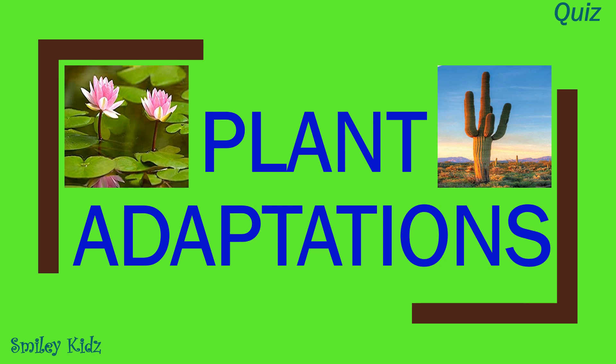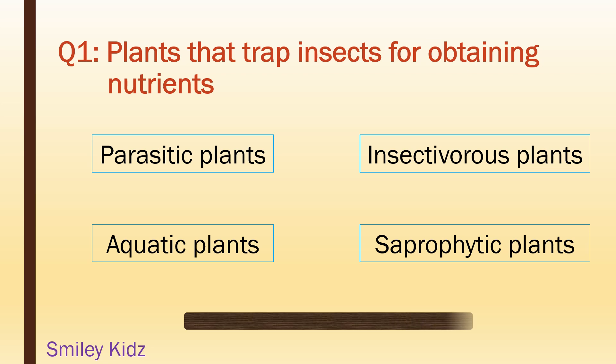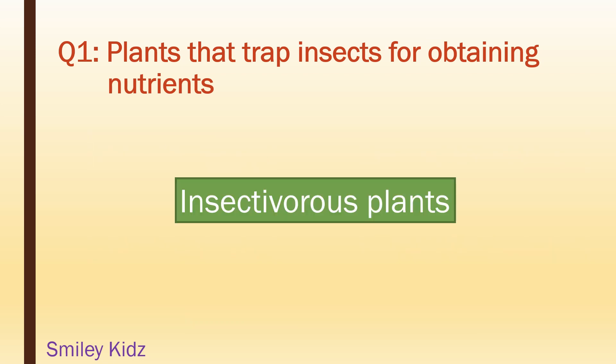Quiz on plant adaptations. Plants that trap insects for obtaining nutrients: parasitic plants, insectivorous plants, aquatic plants, saprophytic plants. Your time starts now. Your time is up. And the right answer is insectivorous plants.